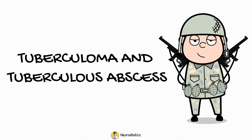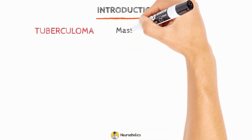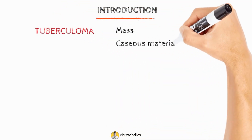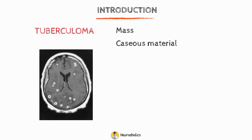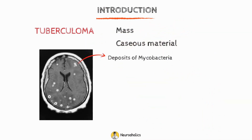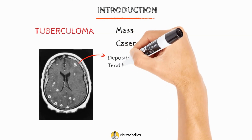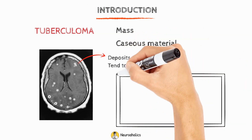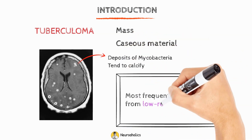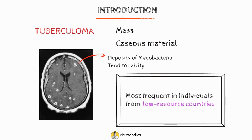Tuberculoma and tuberculous abscess: The term tuberculoma refers to a mass with a composite center of caseous material that develops from intraparenchymal deposits of mycobacteria. These lesions are enclosed by fibrous tissue and have the potential to calcify. The most frequent focal cerebral mass in individuals from low-resource countries is a tuberculoma.